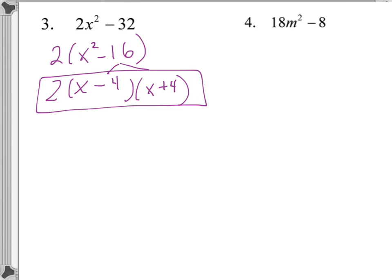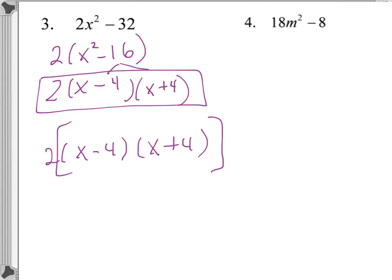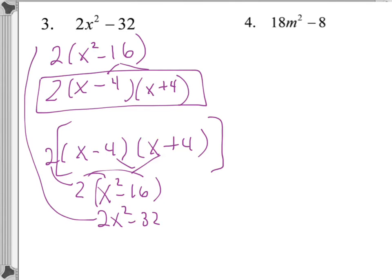If we multiply back to check our work, we'd first multiply the two binomials — multiplication is commutative, so we can multiply in any order. Multiplying those two binomials gives x² minus 16, and then distributing that 2 in gives 2x² minus 32, which is the original expression. So this confirms the answer is correct.